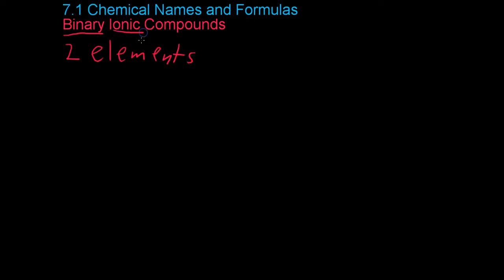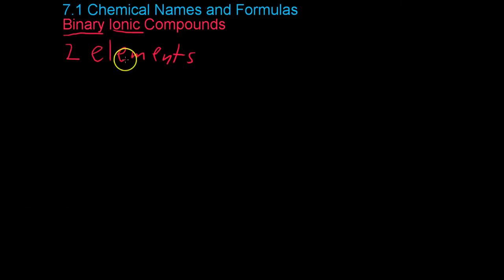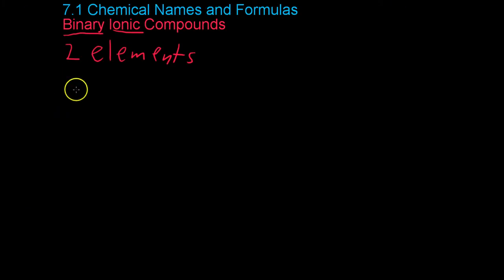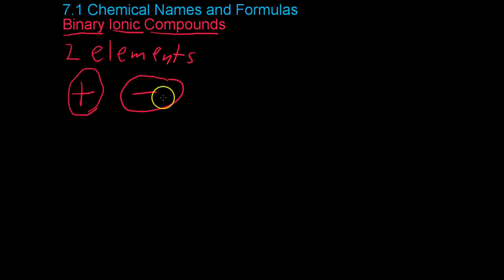Ionic compounds are compounds in which electrons are given or taken by different elements, and in ionic compounds, the two elements in this case will form ions of either positive cations or negative anions. And within these various compounds, the total number of positive ions has to balance out the total number of negative ions. So I'll give you an example of a binary ionic compound.